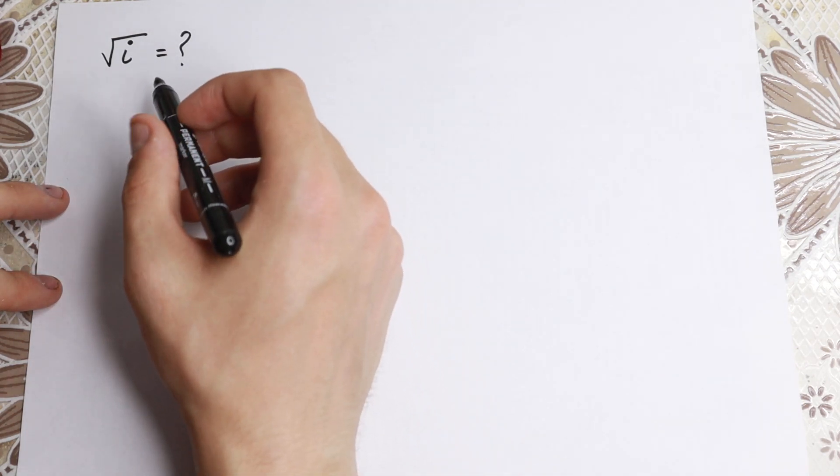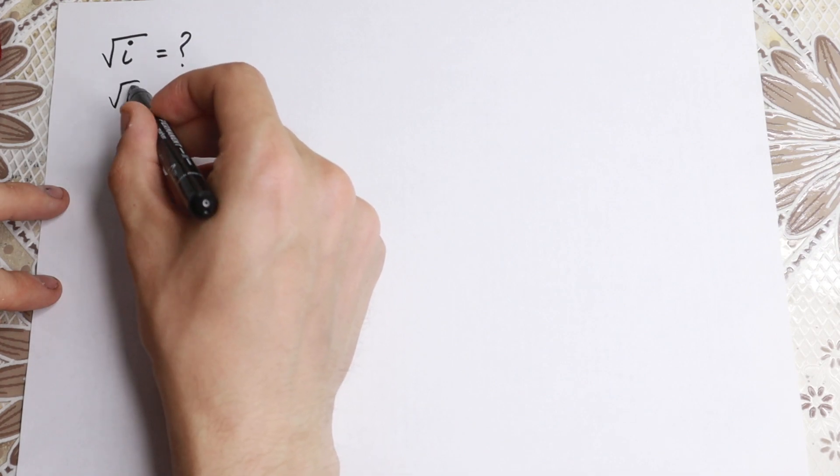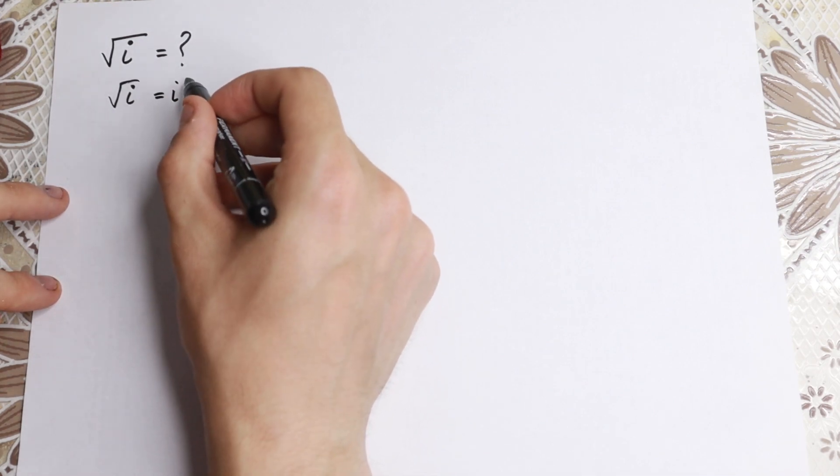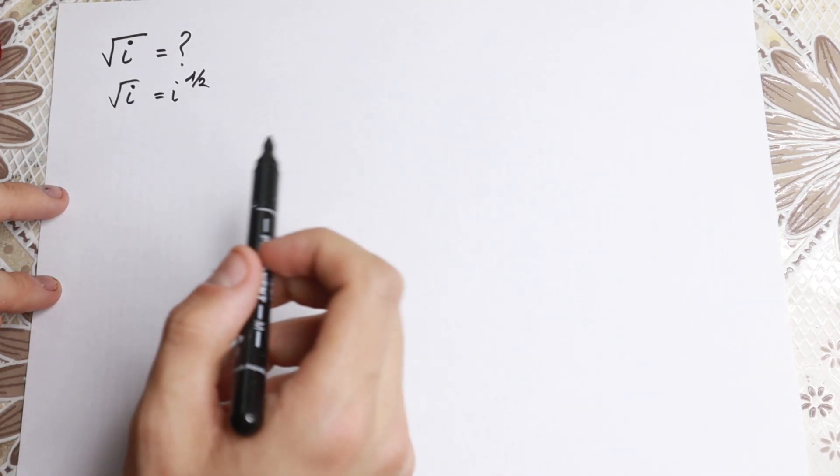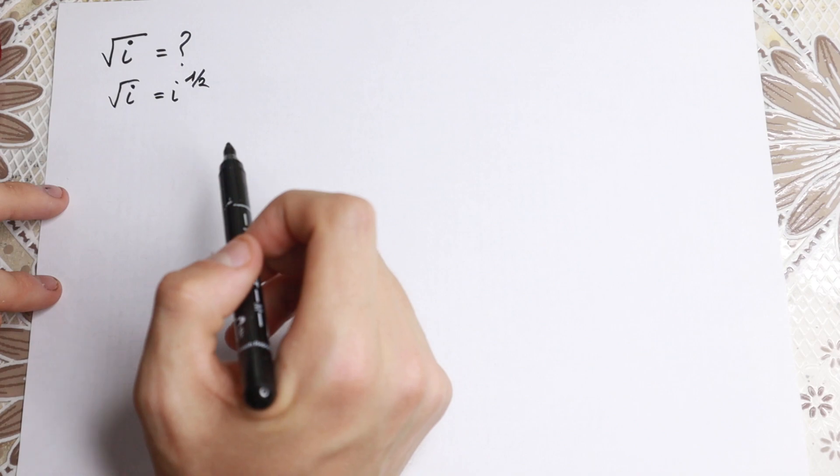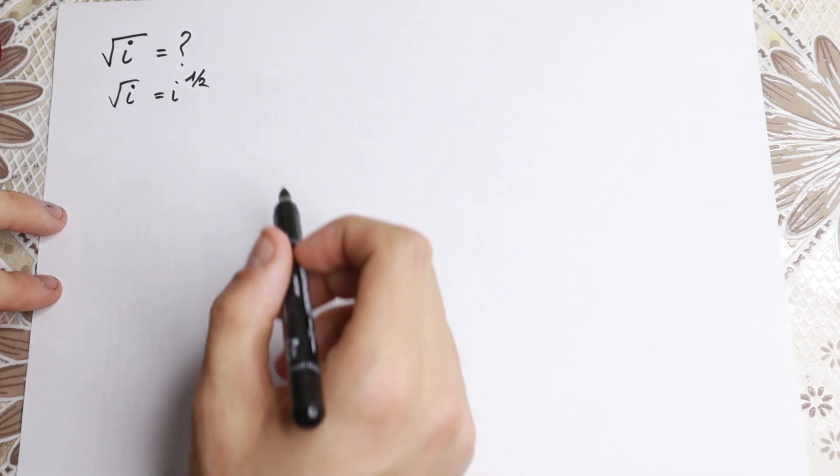First of all, we can write the square root of i as i to the power of one-half. But this is good for us because I want to show you a really good trick. Take a look closely.